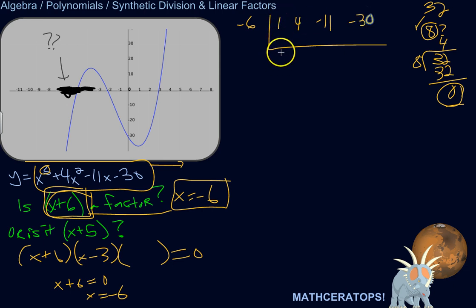So let's do some synthetic division. First thing you do is you just pull this first coefficient down. And then you begin. So 1 times negative 6 is negative 6. Add the column. 4 plus negative 6 is negative 2. No, negative 2 times negative 6 is 12. Negative 11 plus 12 is 1. 1 times negative 6 is negative 6. Negative 30 plus negative 6 is negative 36.